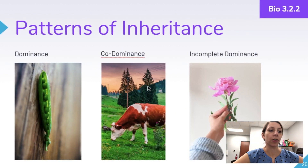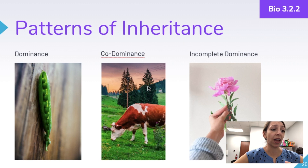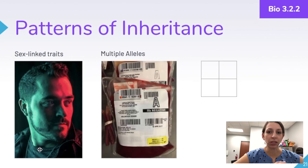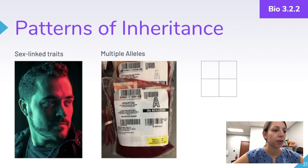Patterns of inheritance you should review include regular complete dominance — which is what you've probably seen in Mendelian genetics practice problems — co-dominance, where two traits are displayed simultaneously in the organism, and incomplete dominance, where we have a blend of traits. There will also be questions on sex-linked traits and multiple alleles. A good example of multiple alleles is blood types. Make sure you know how to predict the inheritance patterns of each of these types of traits.